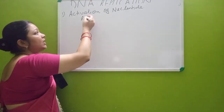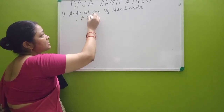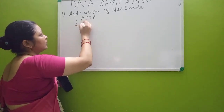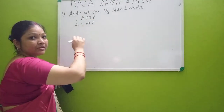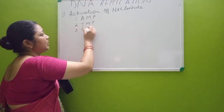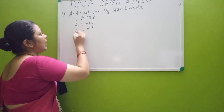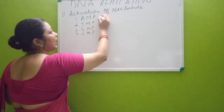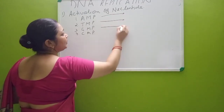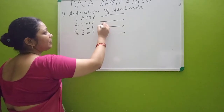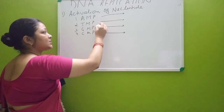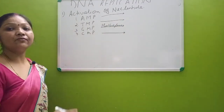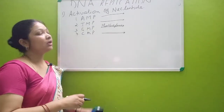For example, adenosine is present in the form of AMP — adenosine monophosphate. Thymine is present as TMP, guanosine as GMP, and cytosine as CMP — all in monophosphate form. These have to be activated, and they are activated by the enzyme called phosphorylase.